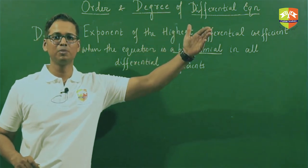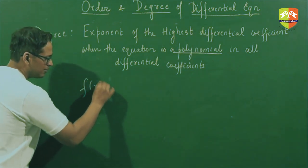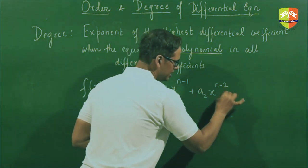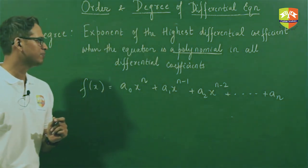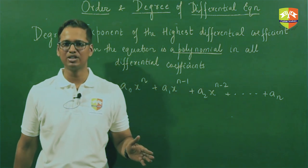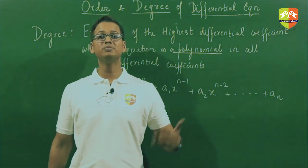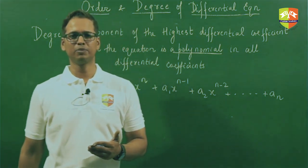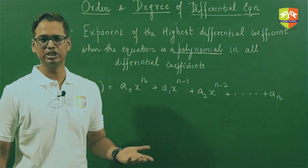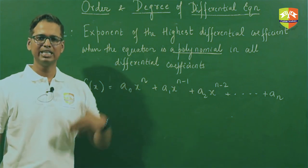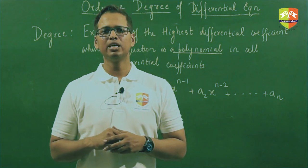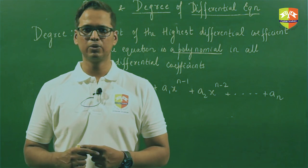Recall from class 10th: a polynomial function has terms where the powers of the variables must be whole numbers — no fractional powers, no negative integer powers. Zero and natural numbers are acceptable, but the powers on the variables must be whole numbers. Similarly, when your differential equation is expressed so that all the differential coefficients have whole number powers, only then can we decide on the degree.